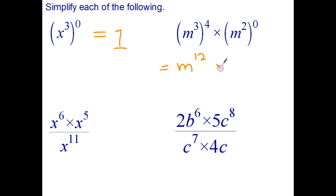Anything to the zero power is 1, so times 1. And anything multiplied by 1 is itself, so m to the power of 12 times 1 is just m to the power of 12. Next question.